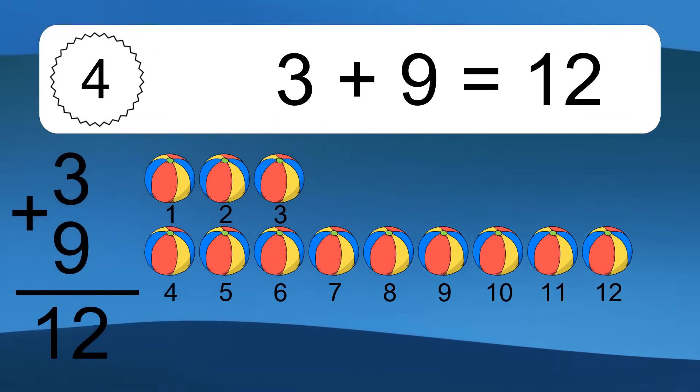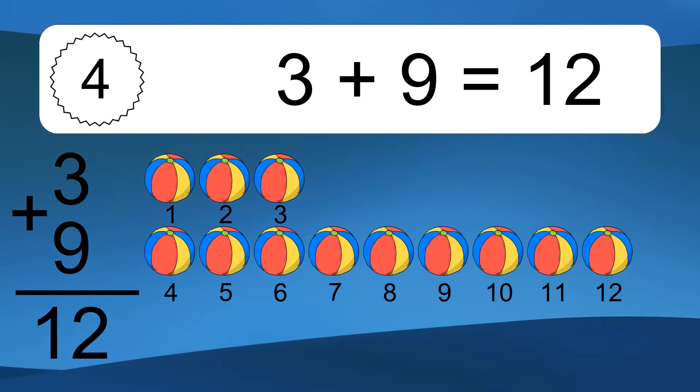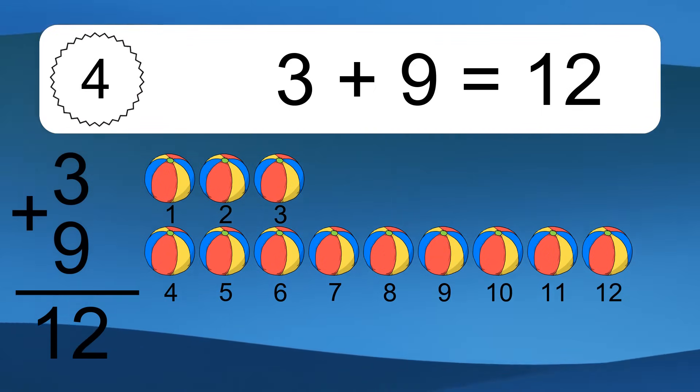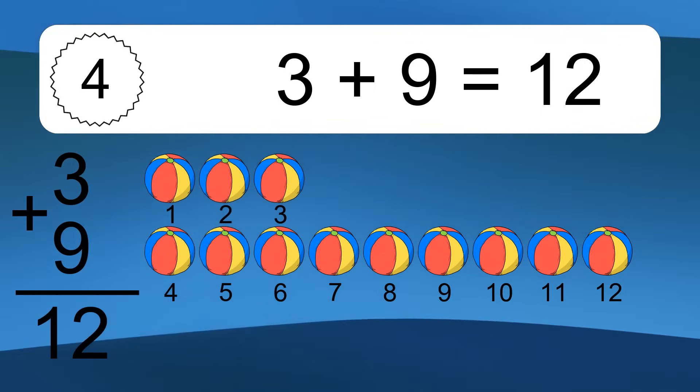3 plus 9 equals what? Let's count it. 1, 2, 3, 4, 5, 6, 7, 8, 9, 10, 11, 12.